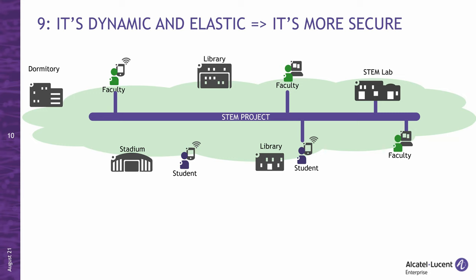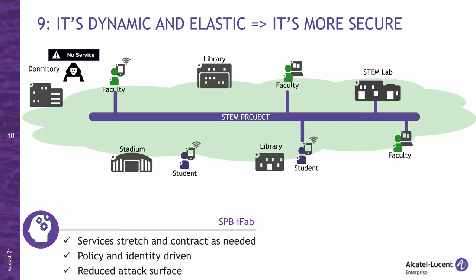Now imagine a hacker wanted to disrupt the STEM project. Without the right credentials, the hacker won't be able to connect to the STEM project service and therefore won't be able to disrupt it or hack it. Services stretch and contract as needed as users or devices connect, disconnect, and roam. The service is only active for the duration of the legitimate user connection. This process is automatic, driven by identity and policies, and does not require any manual intervention. The security benefit is a reduced attack surface because the service is only enabled where and when strictly required. Additional benefits include reduced unnecessary broadcast and MAC learning, resulting in better performance and higher stability.